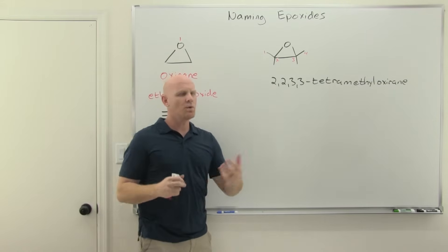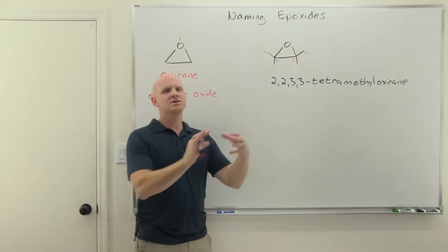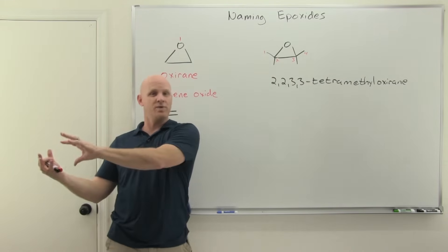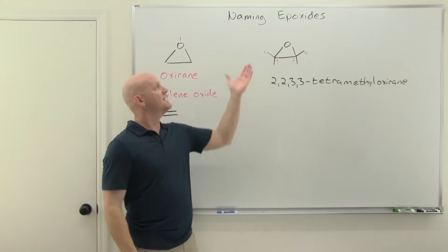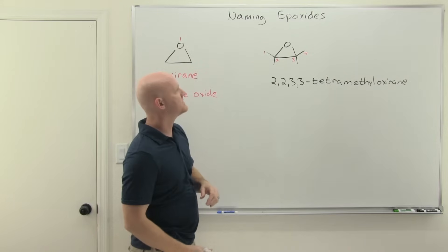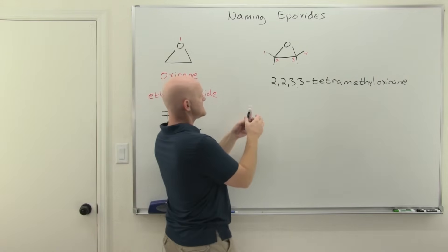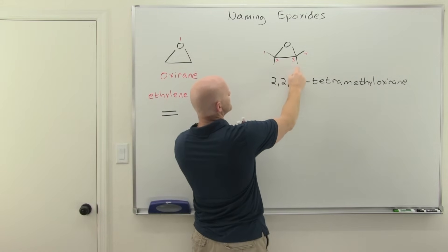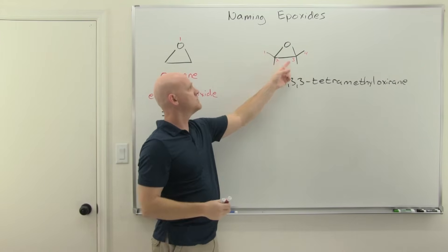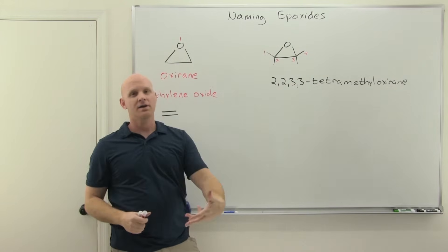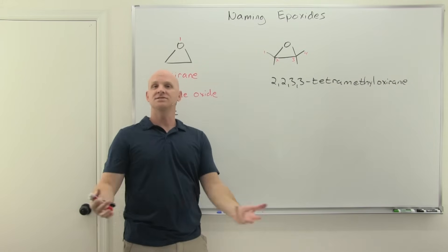And again, this is unusual because normally if you've got a ring, either the ring is your parent chain or something that's not the ring is your parent chain, but not parts of both. Well, this is unusual with epoxides. And so in this case, you've got methyl groups on carbons two and three, but also attached to both carbons two and three is an epoxide, and we call it an epoxy substituent.